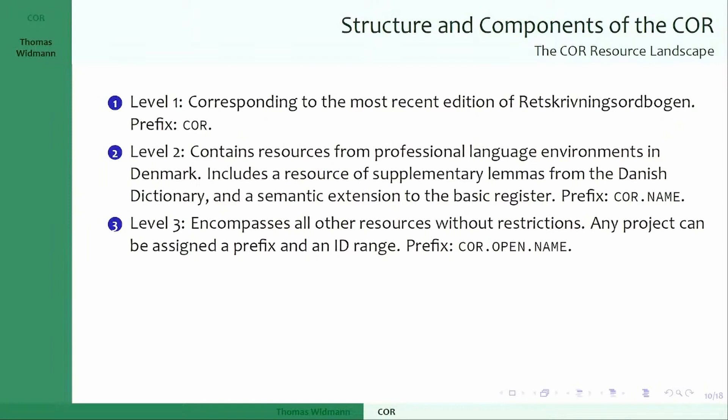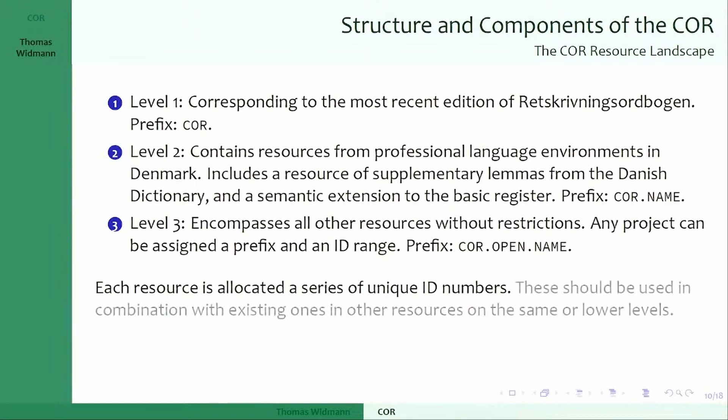Anybody in this room can write to me, and you'll get a sequence of numbers and a name you can use — that's COR Open. You get a series of unique ID numbers that are used forever, but they should be used in combination with existing ones. So if you're defining 'donut' you should use the existing donut ID if it means the same thing. If you have a new lemma that isn't in COR1, of course you should use your own.